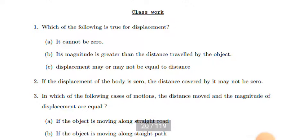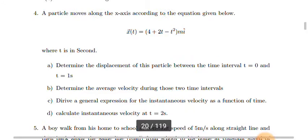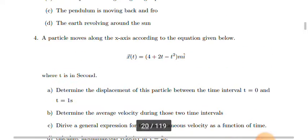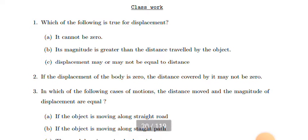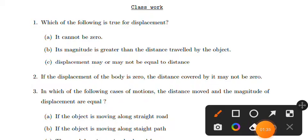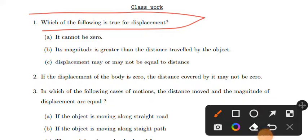This is D.Y.A. We're studying displacement. Which of the following is true for displacement? Displacement is a vector quantity — it cannot be zero. The magnitude of displacement cannot be zero.